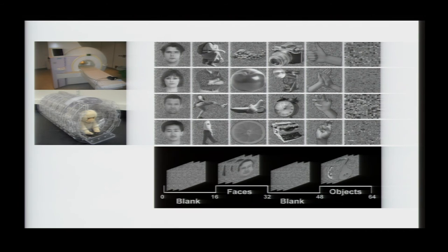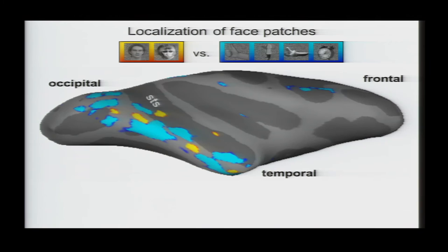So the monkeys were sitting in this horizontal chair and they got juice inside the scanner for fixating. And we presented these six different categories of images of faces, bodies, fruits, gadgets, hands, and scrambled patterns. And then we looked across the entire brain for regions that respond more to faces than to the non-face categories. And we've scanned more than 16 monkeys by now on this stimulus. And in almost every single animal, we find these six patches of face-selective cortex just distributed along the temporal lobe. So one posterior patch, two middle patches, and three anterior patches.